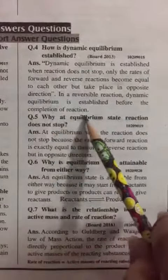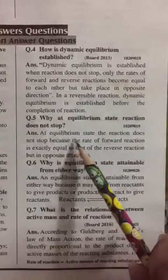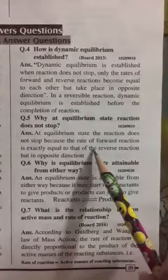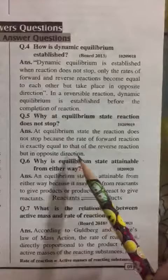Question No. 5 Why at equilibrium state, reaction does not stop? At equilibrium state, the reaction does not stop because the rate of forward reaction is exactly equal to that of the reverse reaction but in opposite direction.